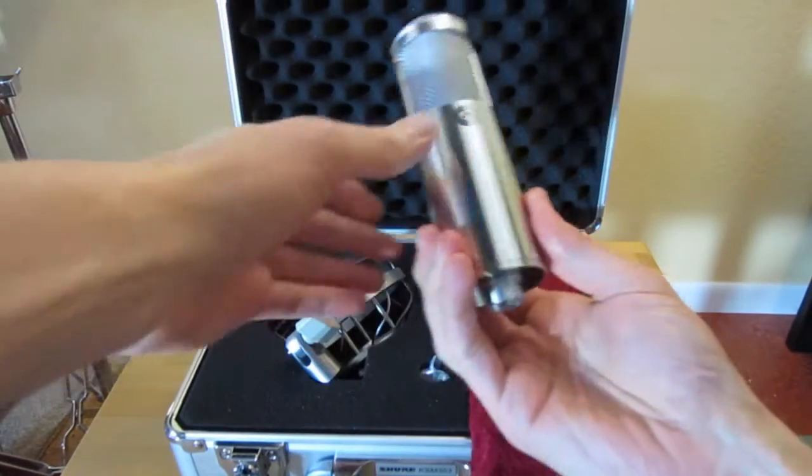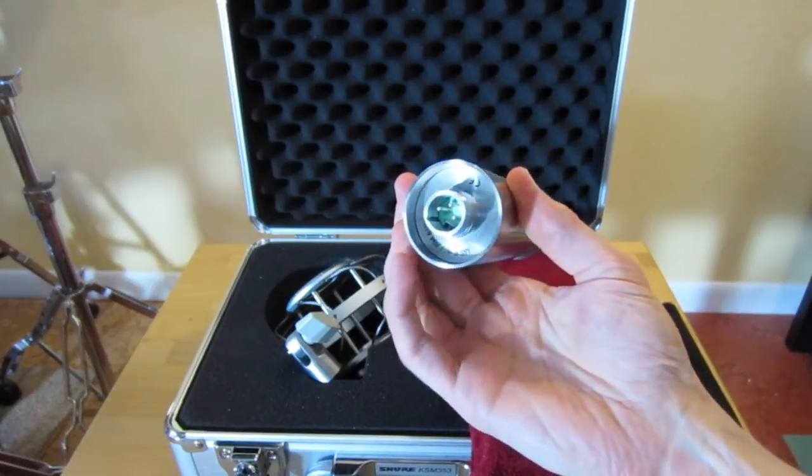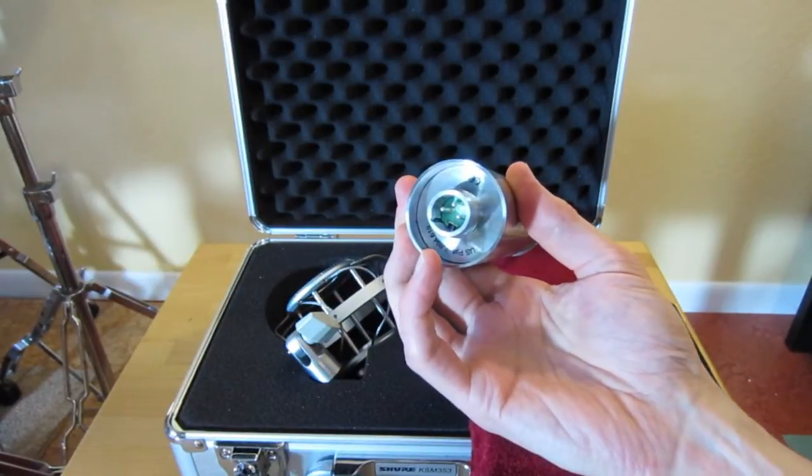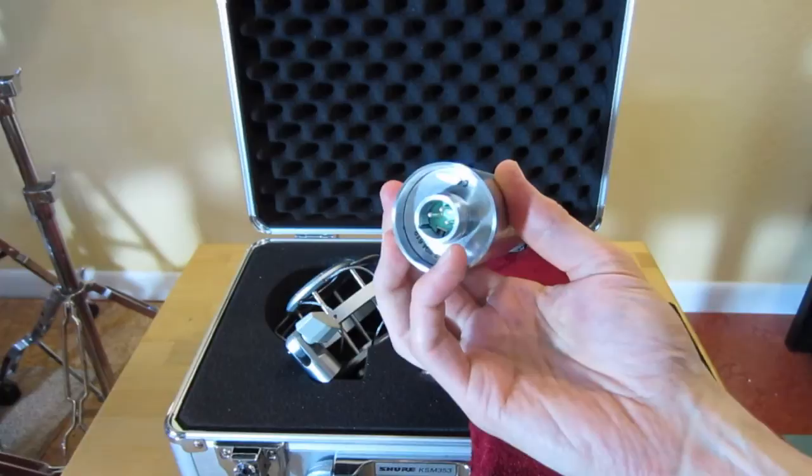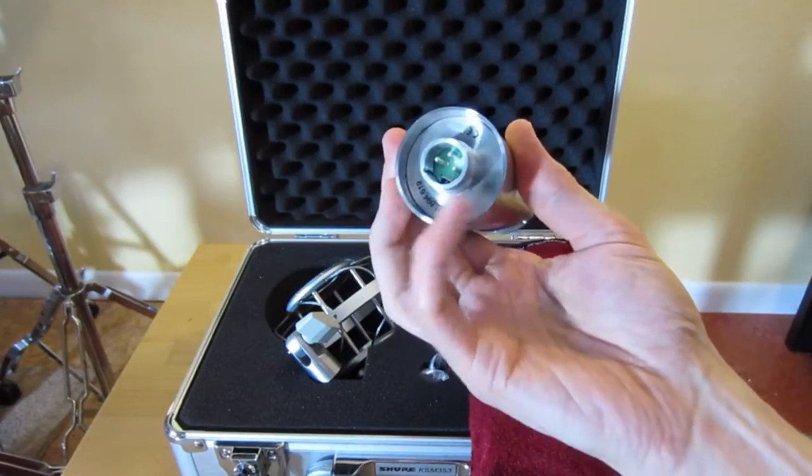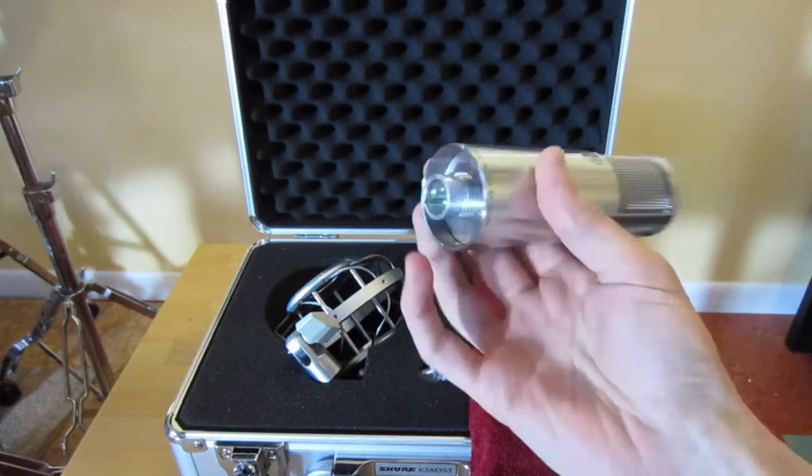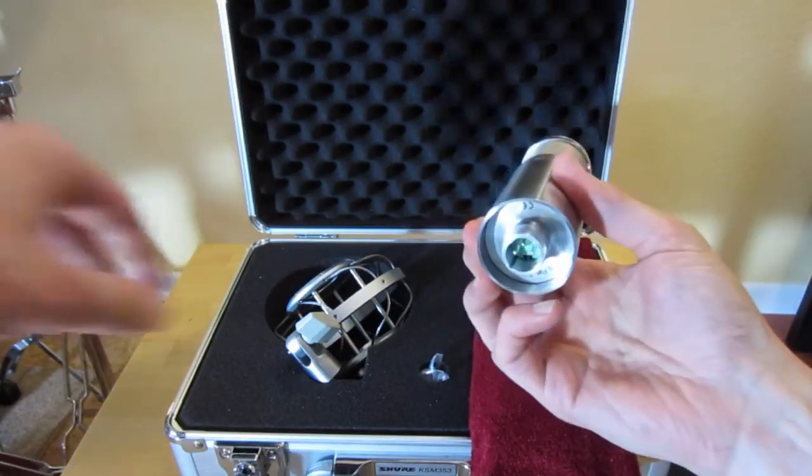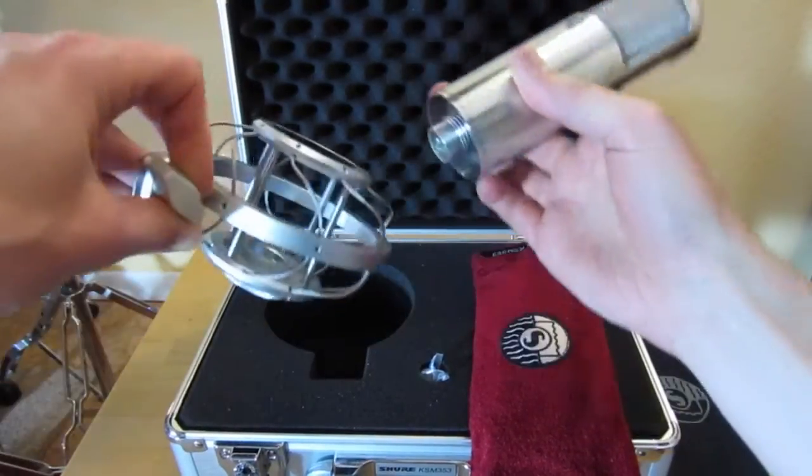There's the mic. The bottom of the mic has been redesigned. The original Crowley and Trip El Diablo and the original Shure KSM-353 had a flush bottom end here. Shure had to redesign this in order to let it mount to the shock mount.